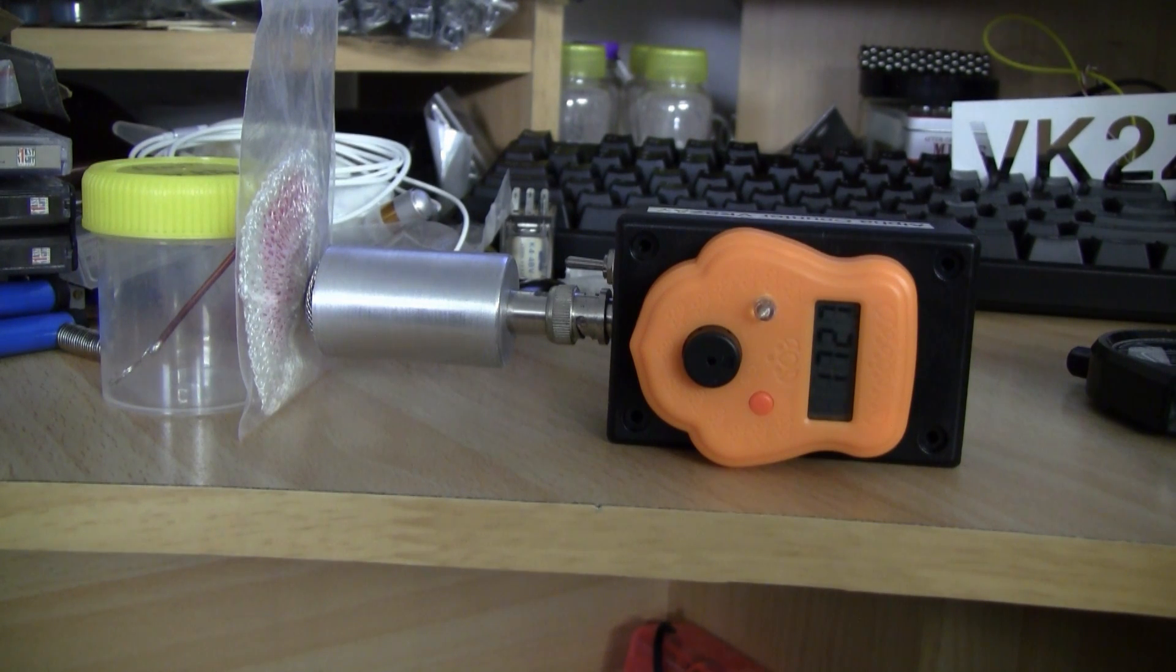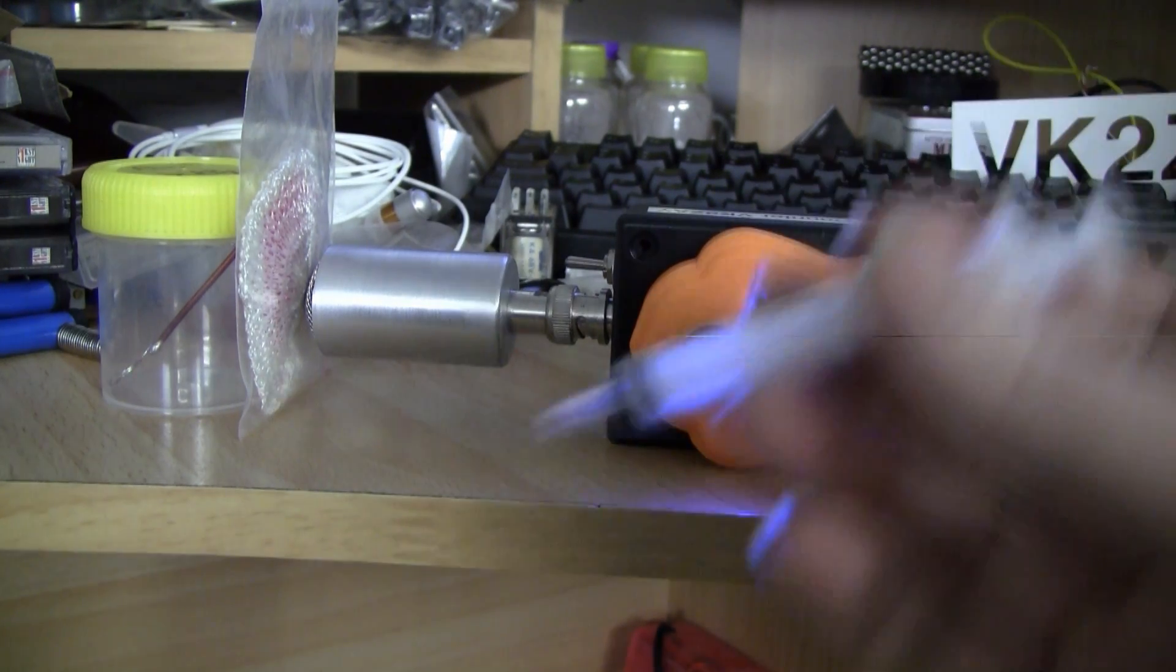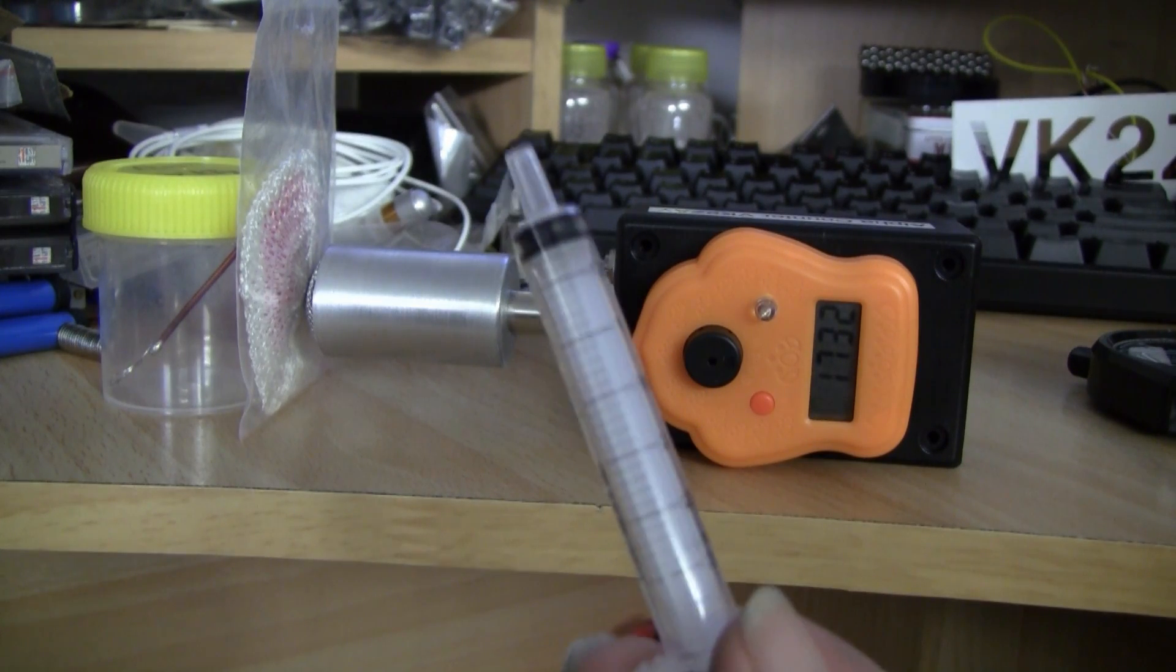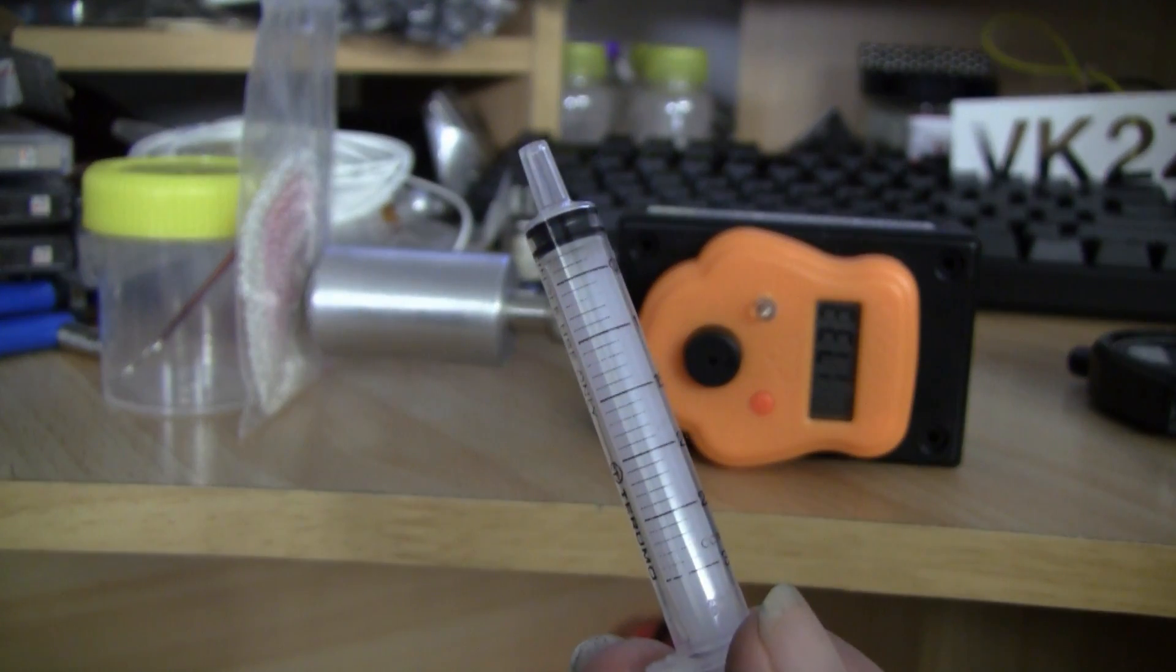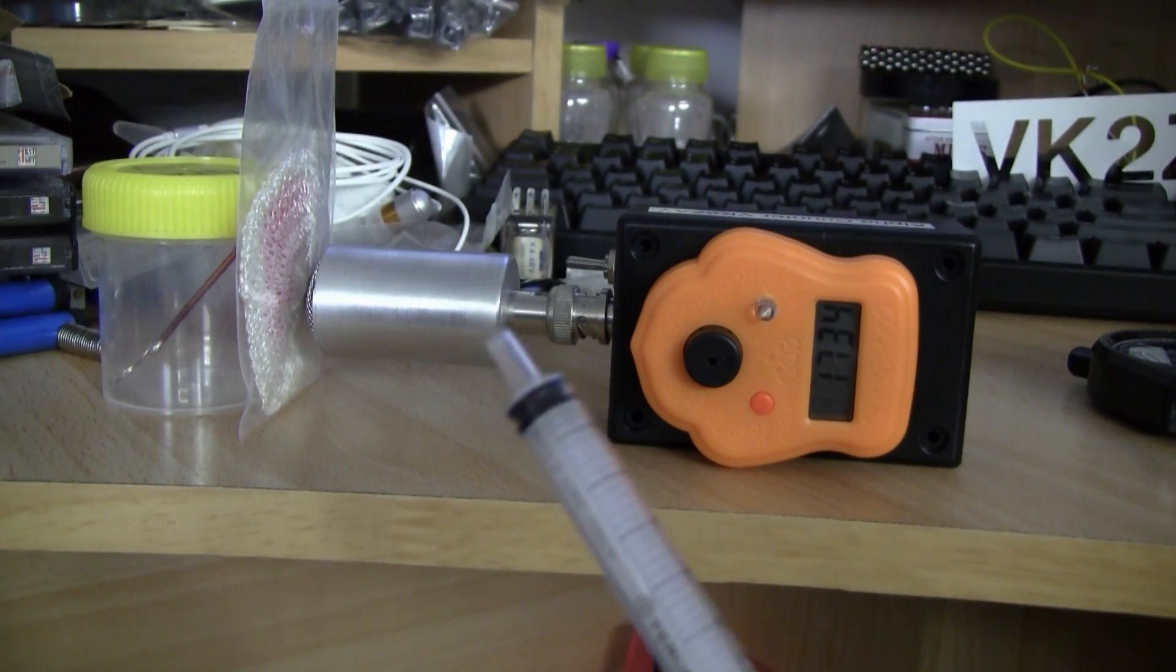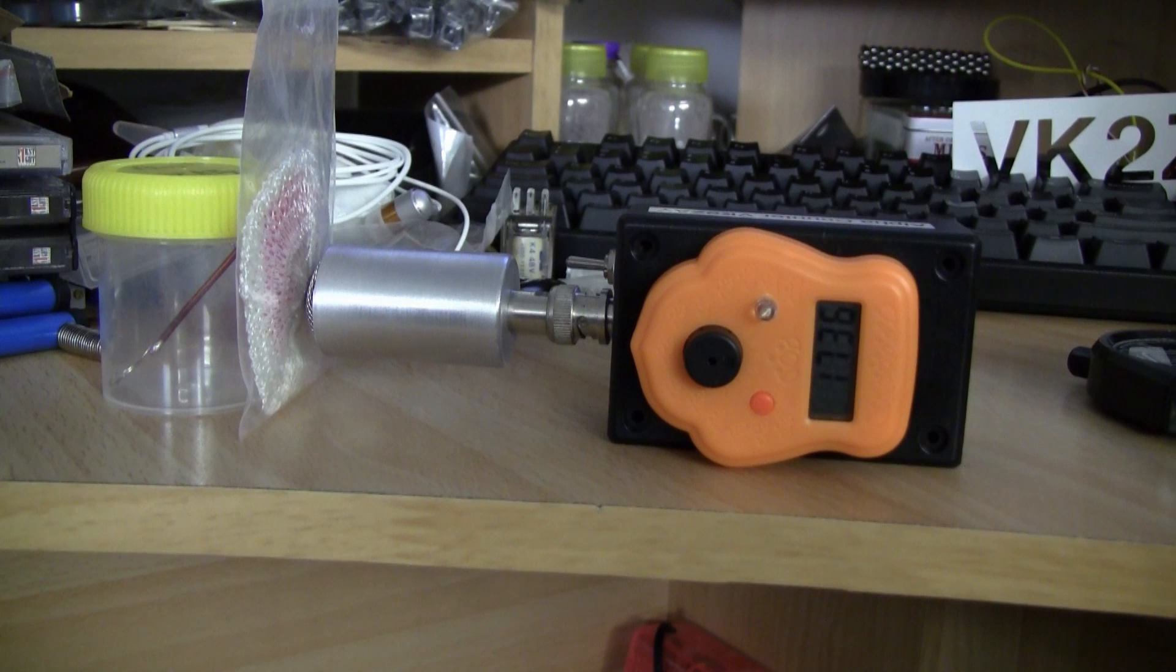But we can do some interesting experiments with this. What I'll do in a moment is I'll draw out 3 cc's of the air inside the bag which contains a reasonable number of atoms of Radon 220 and I'll inject it into the ion chamber and let it decay and we can actually watch the decay down to the background because the half-life is about 55 seconds.